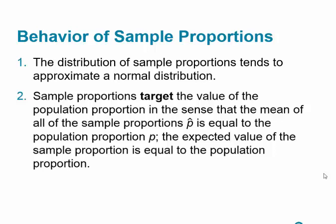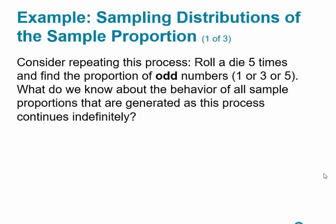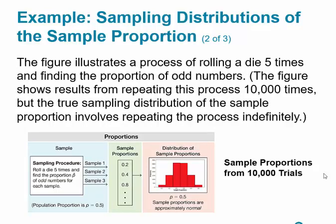If we take x amount of samples of the same size, the mean of all the p-hats will be equal to the population proportion. Here's an example of rolling a die five times to find the proportion of odd numbers — 1, 3, and 5. They did this 10,000 times. The true sampling distribution involves repeating the process indefinitely. The proportions are approximately normal, and the population proportion of 0.5 matched the mean of the distribution of sample proportions, which also came out to 0.5.